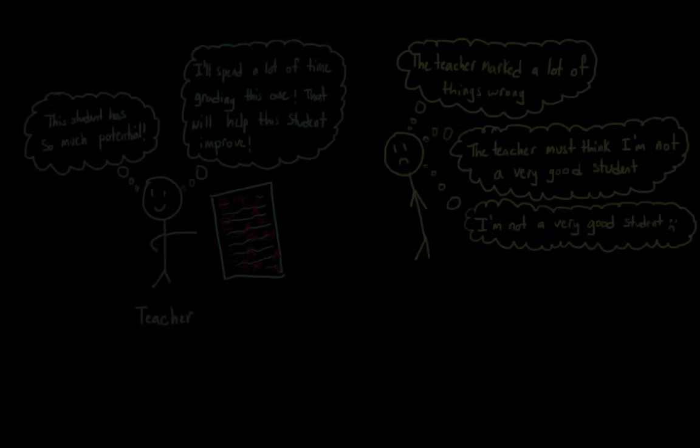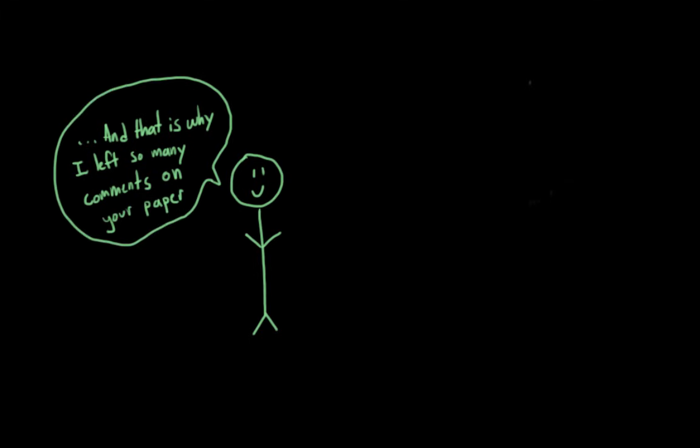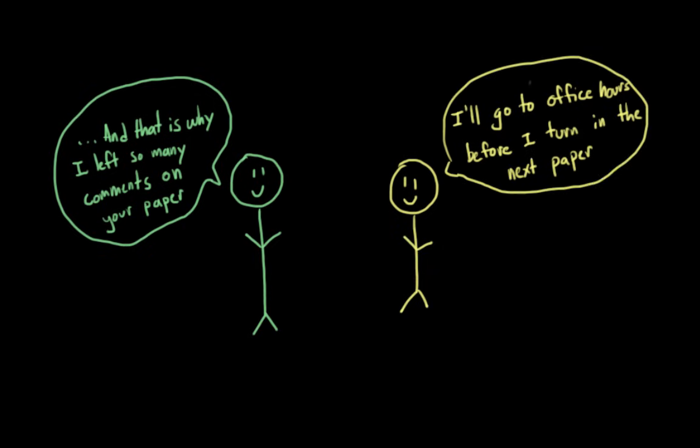But this doesn't have to be the end of our story, because it can also be influenced by future interactions. Let's say that the student talks to the teacher after class about why they graded so harshly. At that point, the teacher might explain that they think the student is on the right track, but that they need to put in a little bit more effort. Because of this additional interaction, the student was able to revise their incorrect perceptions, and this could lead the student to developing a different self perspective.